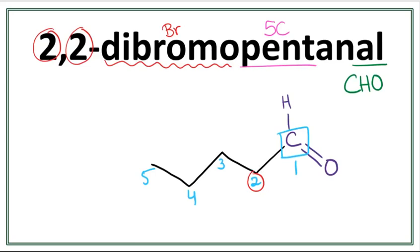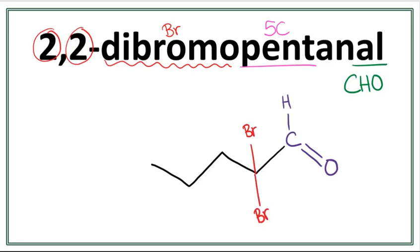Let's get rid of these numbers and let's attach the bromines on the second carbon. This is the structure for 2,2-dibromopentanal. Thank you for watching and don't forget to hit subscribe.